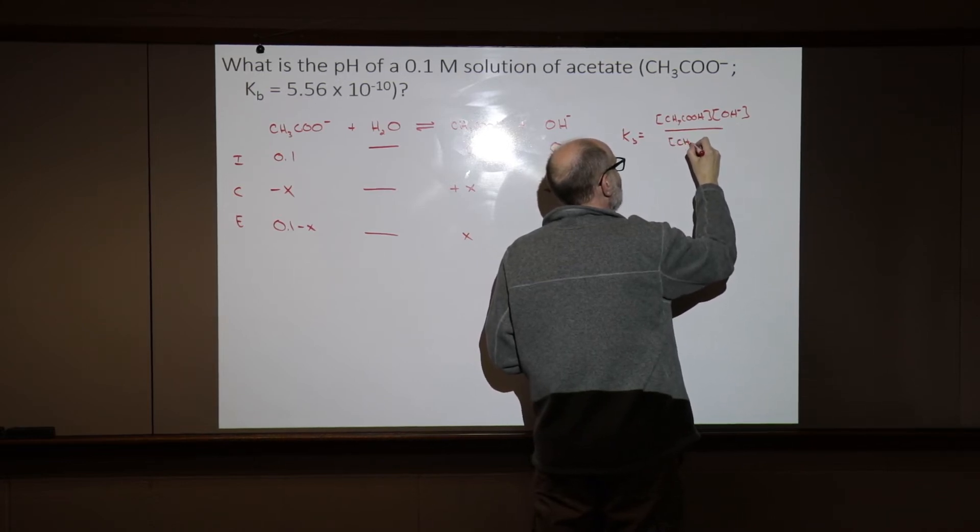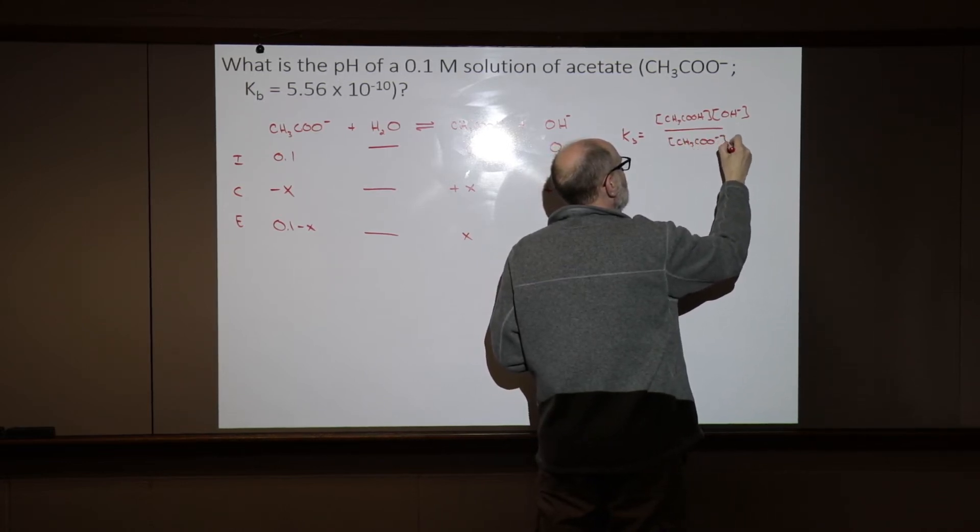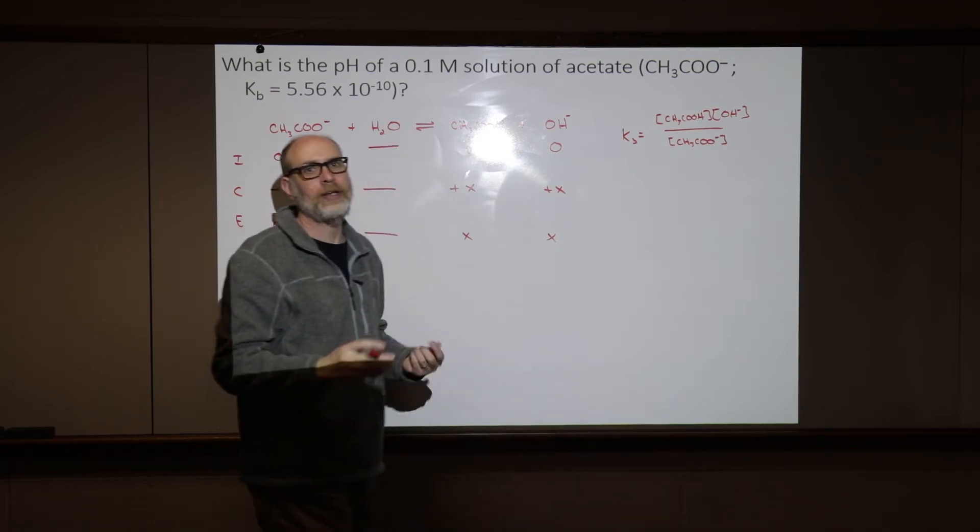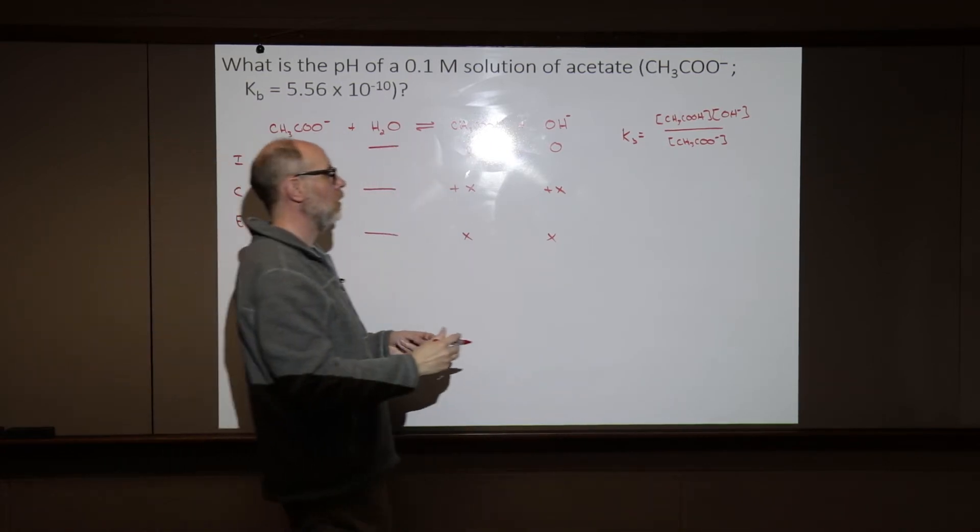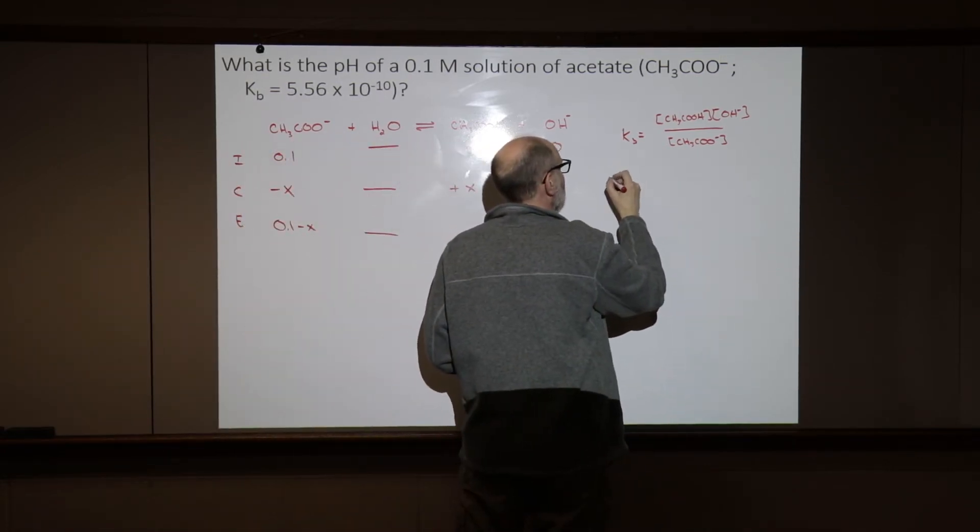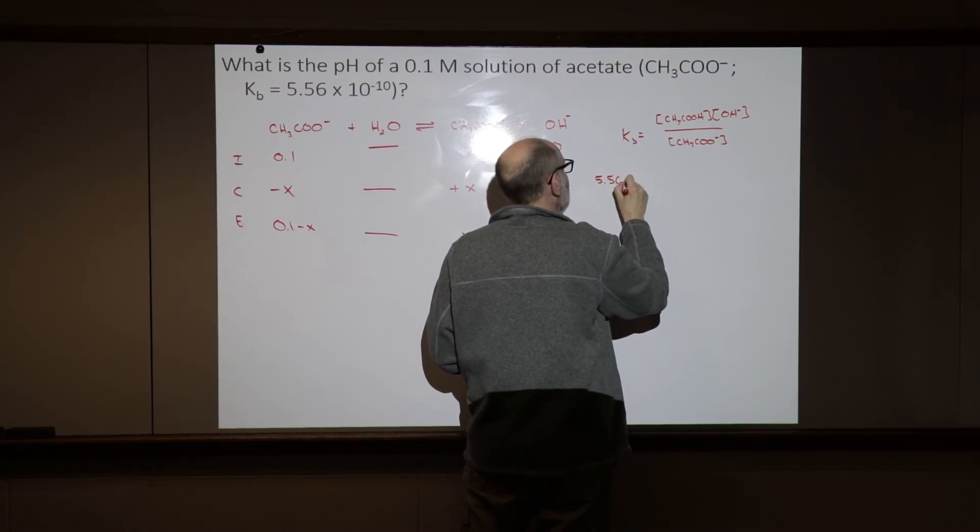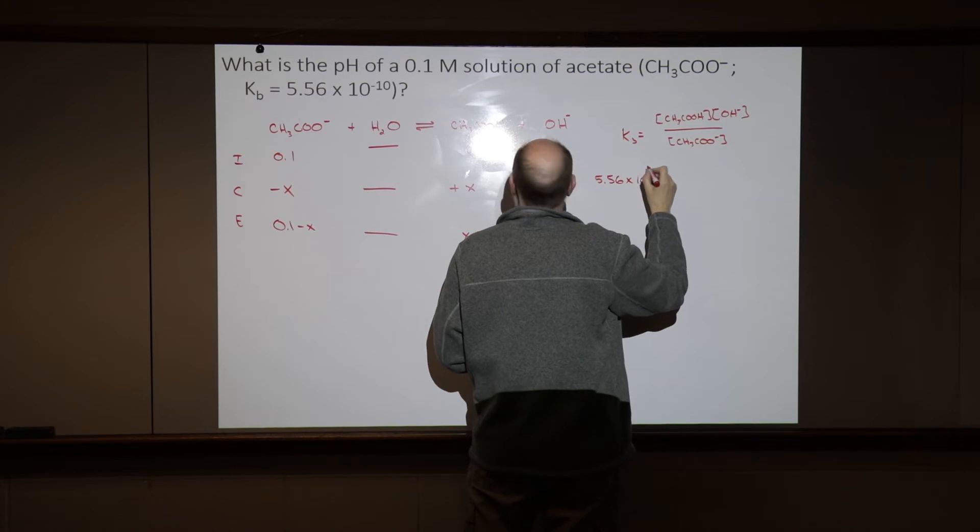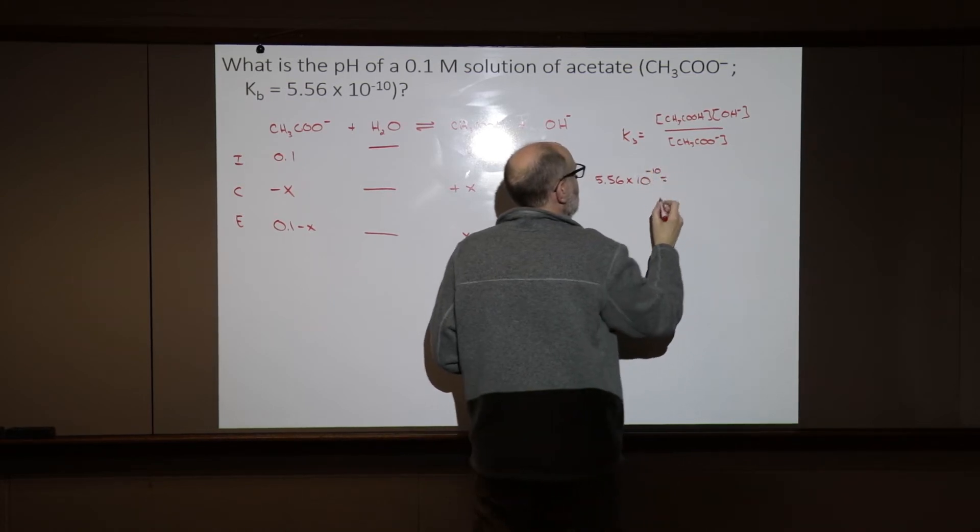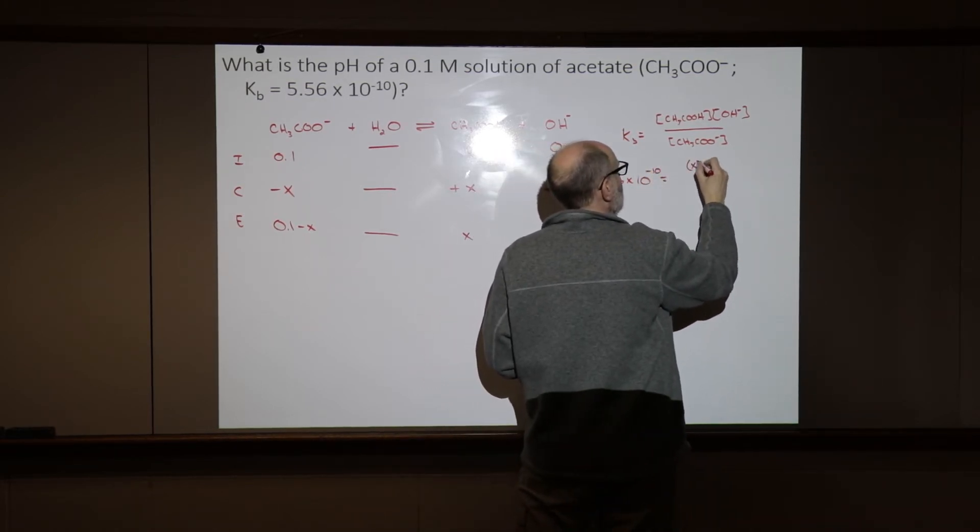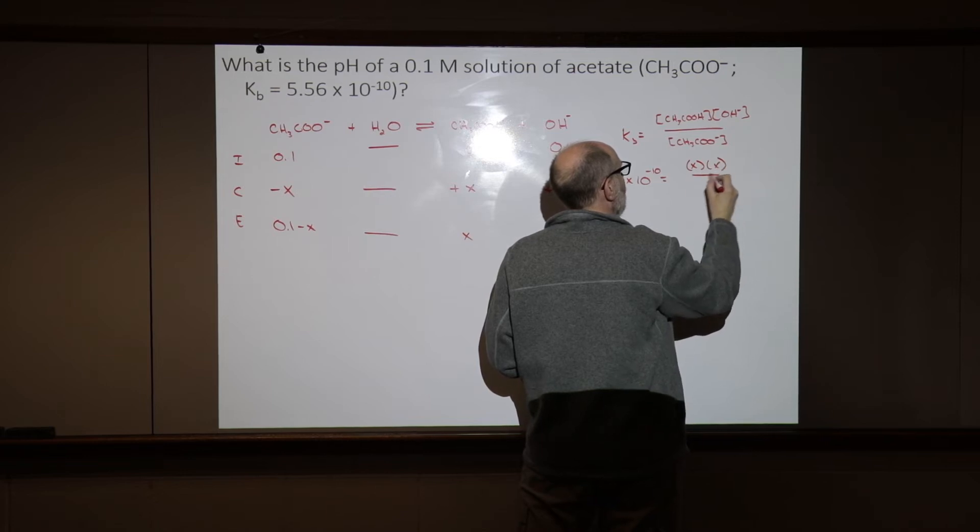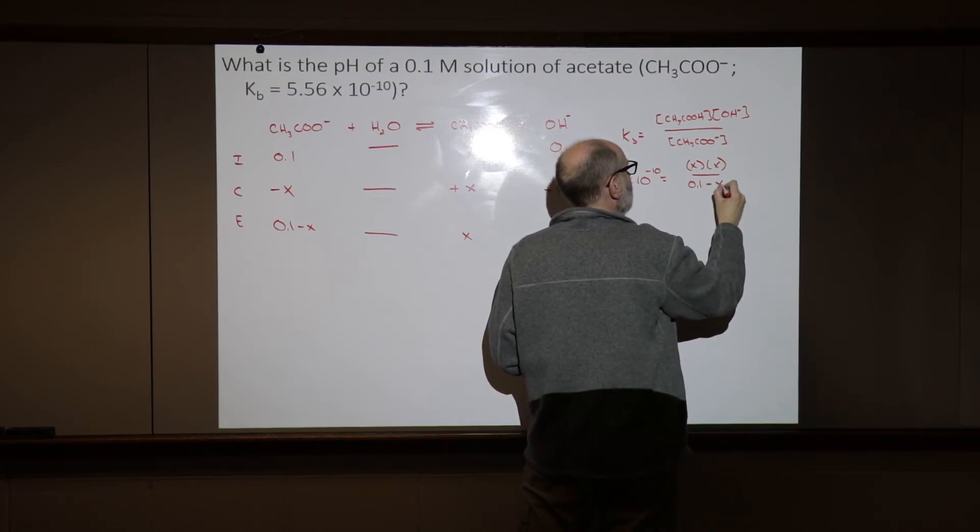over the concentration of acetate at equilibrium. What's left over when we get to equilibrium? That's what goes into this expression. And then we get 5.56 times 10 to the minus tenth is equal to x times x over 0.1 minus x.